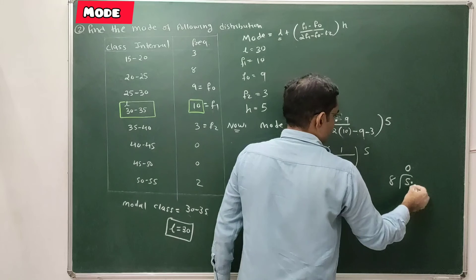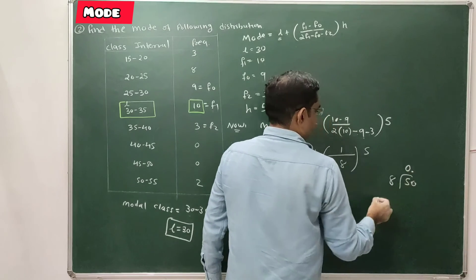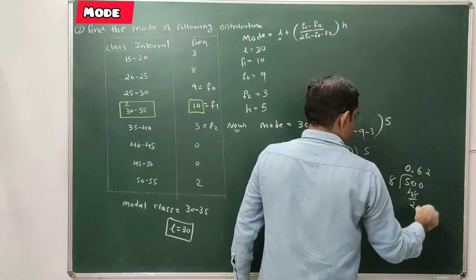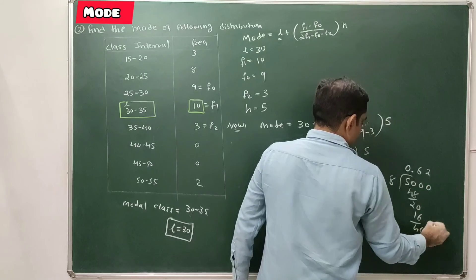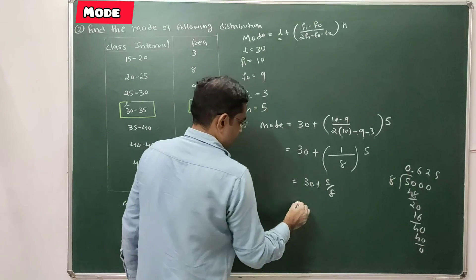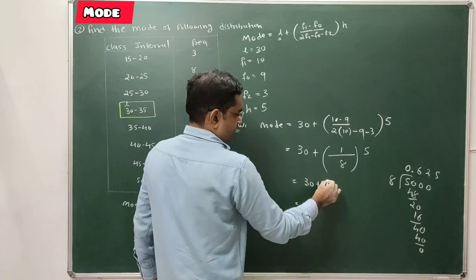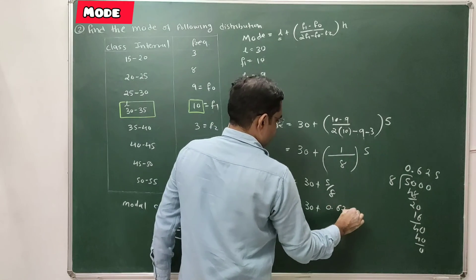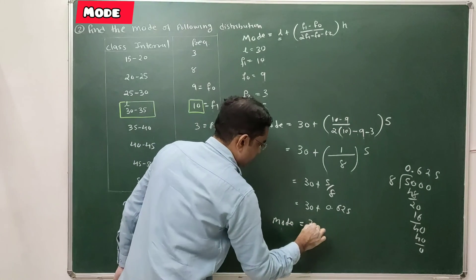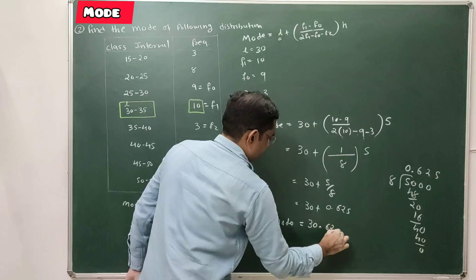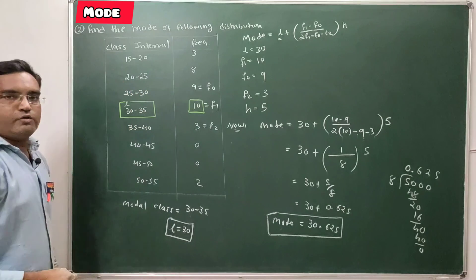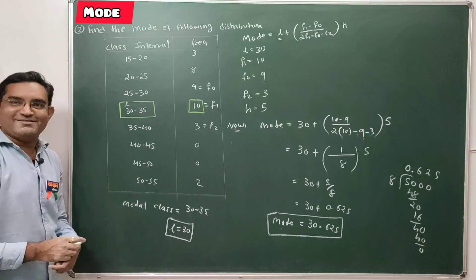5 divided by 8 cannot be simplified directly. Performing long division: 5 by 8 equals 0.625. So the mode of the given frequency distribution is 30.625.